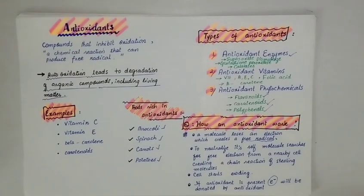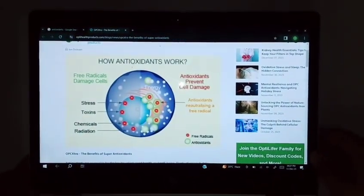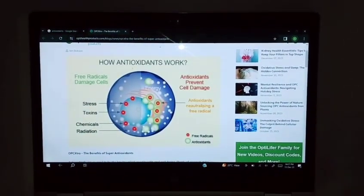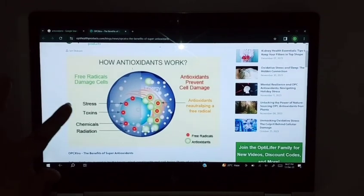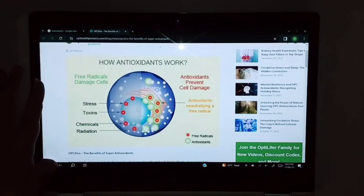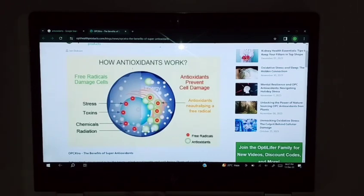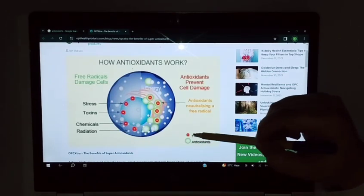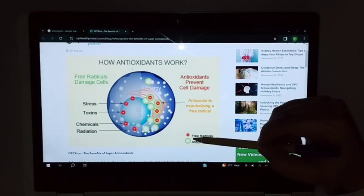Dear students, how antioxidants work can be understood from this diagram. The molecule loses electrons due to stress, toxins, chemicals, and radiation. If you can see, antioxidants are represented with these green circles, and the red ones are free radicals.